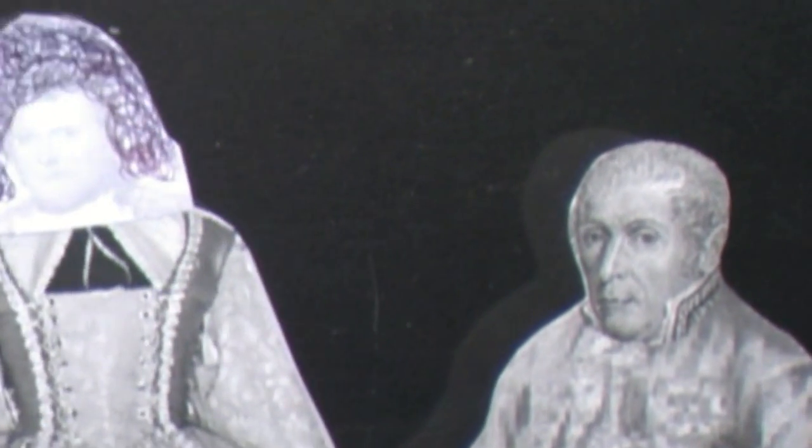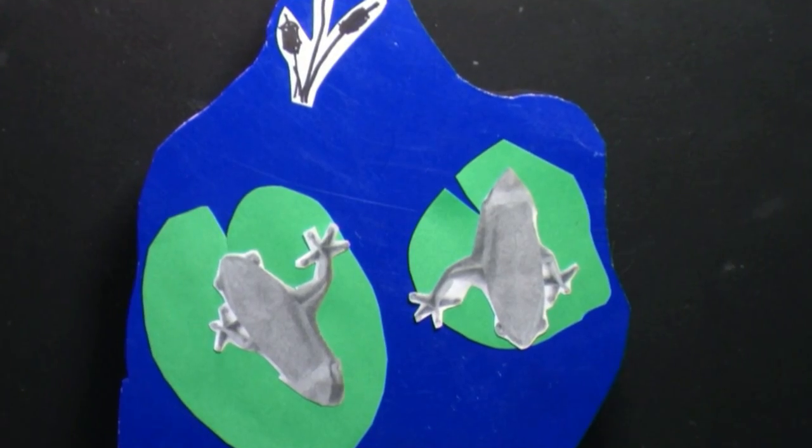He wanted frog legs. He started his own experiments and quickly discovered that frog tissue was not the source of electricity but a sensitive detector.